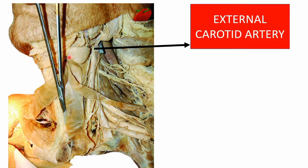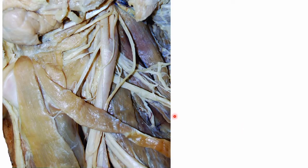The common carotid artery bifurcates at the level of the superior border of the thyroid cartilage into external and internal carotid arteries. On the left side, the common carotid artery extends directly from the arch of aorta, whereas on the right side it comes from the brachiocephalic trunk. This origin is a tricky question sometimes asked in practical examinations.